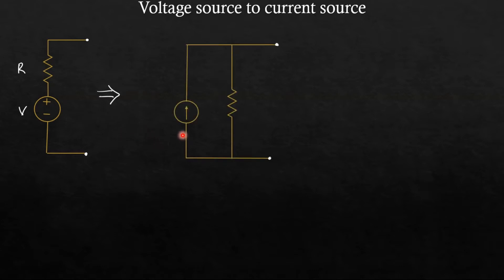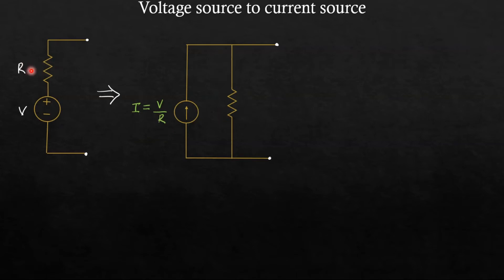I have converted this voltage source into a current source, with this resistance in parallel with this current source. The value of this current source will be V by R. The same resistance, which was in series with the voltage source, now comes into parallel with this current source, and the value of this current source is V by R.